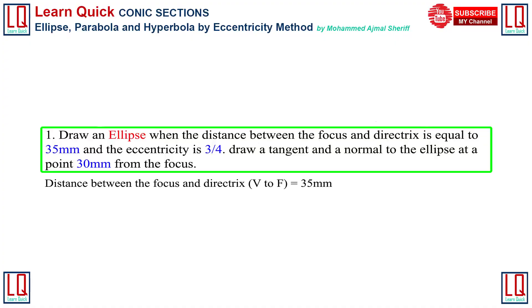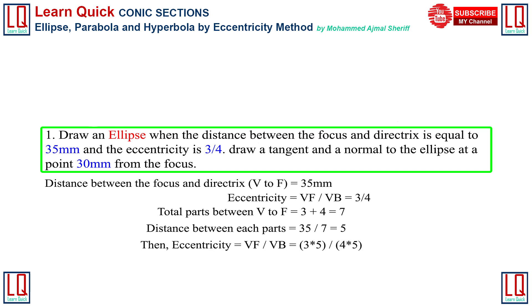The given distance between V to F is 35 mm and eccentricity is 3 by 4. So the total path between V to F is 7. Calculating the distance between each path, we obtain 5. Now the distance between V to F is 15 and V to B is 20 mm.